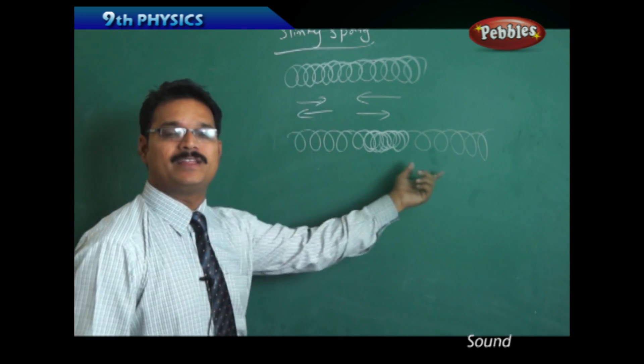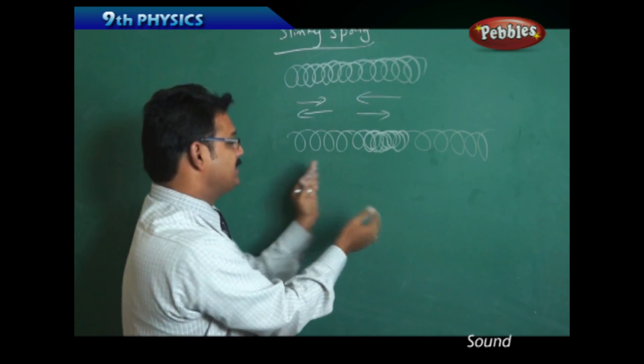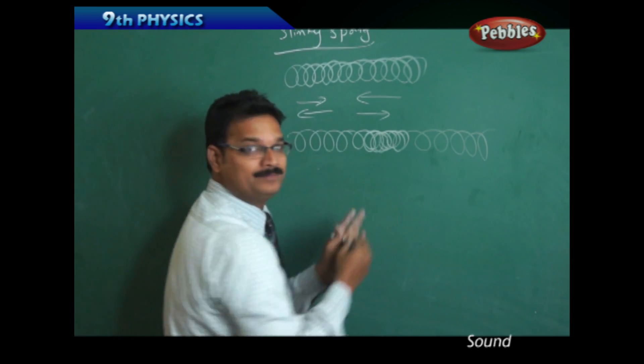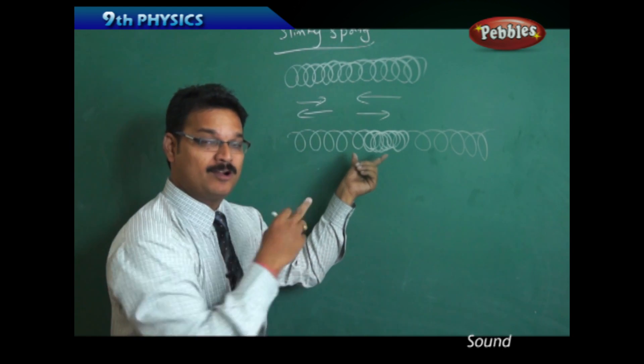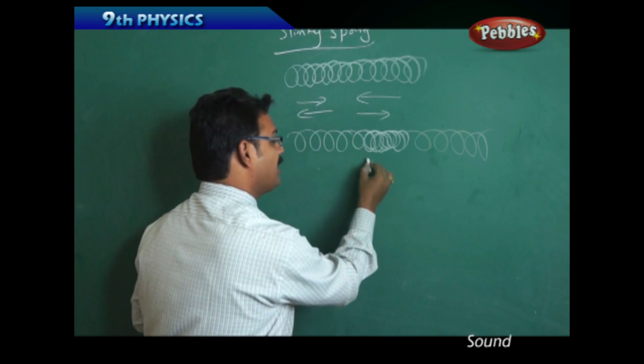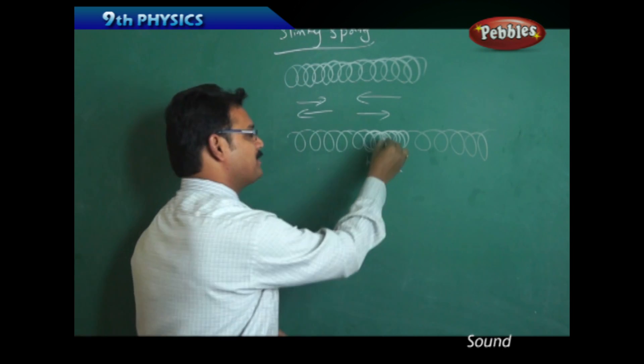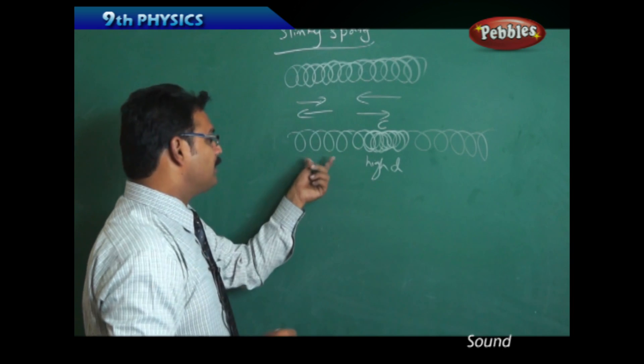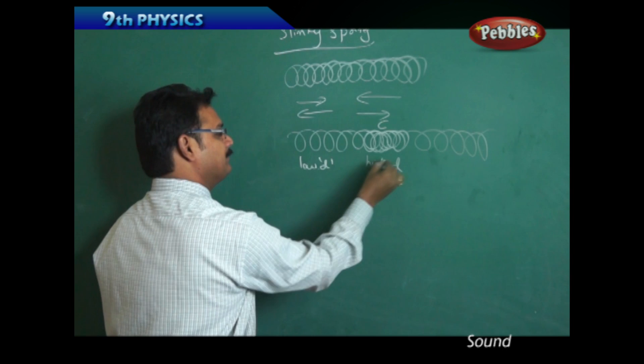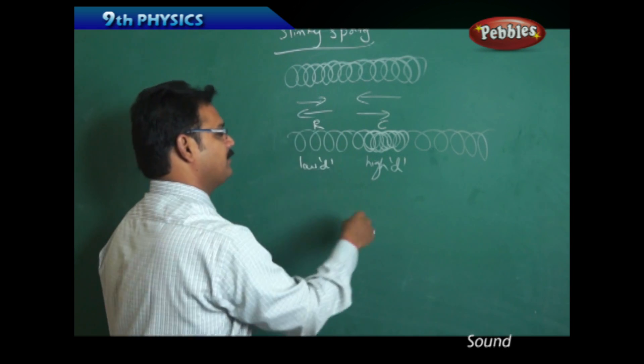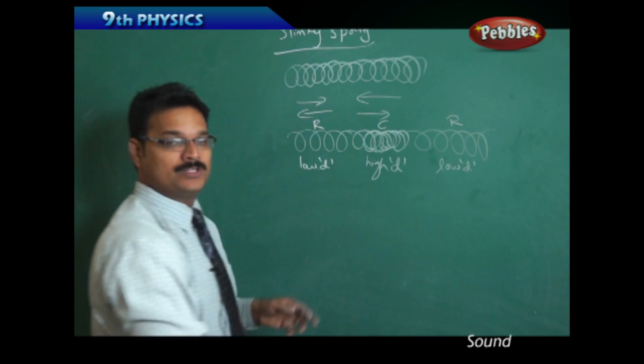Some loops are very closely packed, some loops are spread. The closely packed loops, which have more loops, mean high density—that's compression. Less number of loops means low density—that's rarefaction. This physically shows you that compressions and rarefactions are happening alternately.